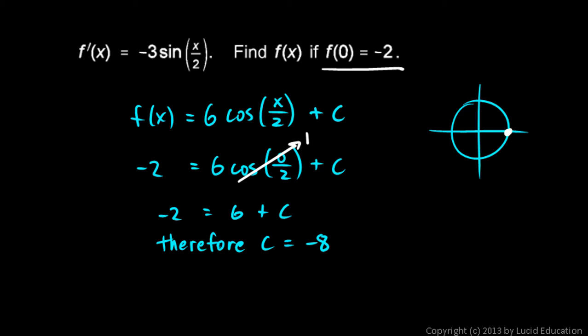So the function then is this. f of x is 6 cosine x over 2 minus 8. That would be the answer to the question. We're told to find the function f, find f if f of 0 is negative 2. And so we plugged in negative 2 when x was 0 right there and found C so now we had a number to put in there and that's our answer.